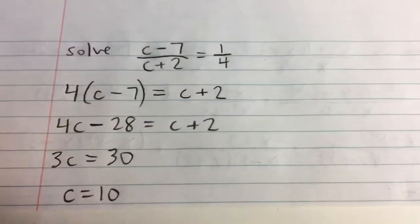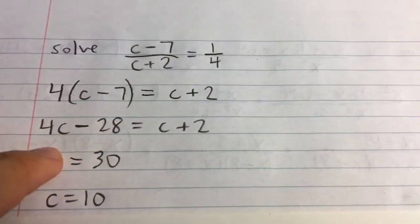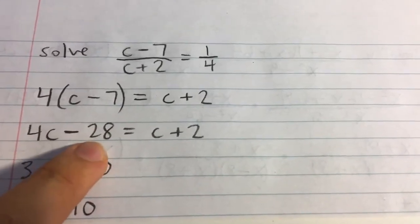Now we can distribute the 4 on the left. We have 4 times c, which is 4c. 4 times negative 7 is negative 28.